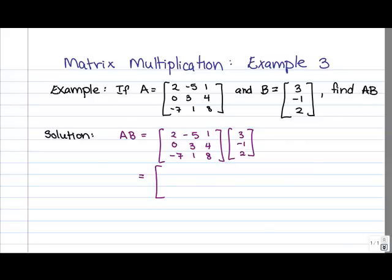What we're going to do to find the entry in position 1, 1 is we're going to multiply the first row of A by the first column of B, and in fact, B only has one column, so we're always going to be using that column. So for entry 1, 1, we've got 2 times 3 plus negative 5 times negative 1 plus 1 times 2.